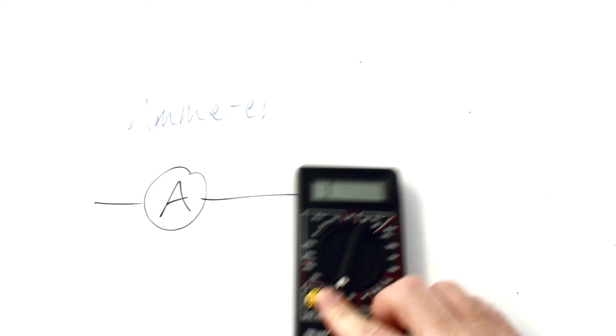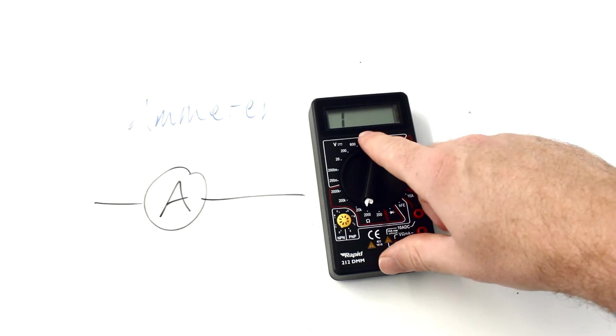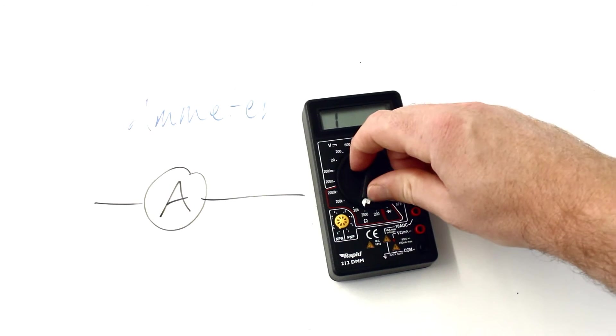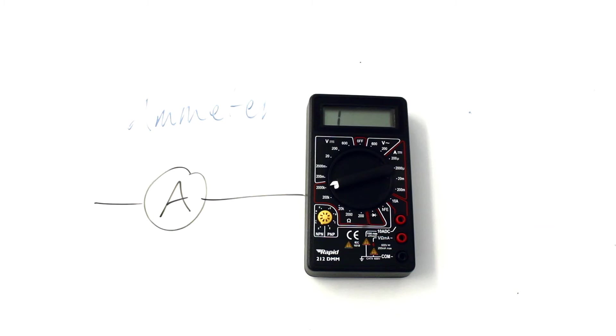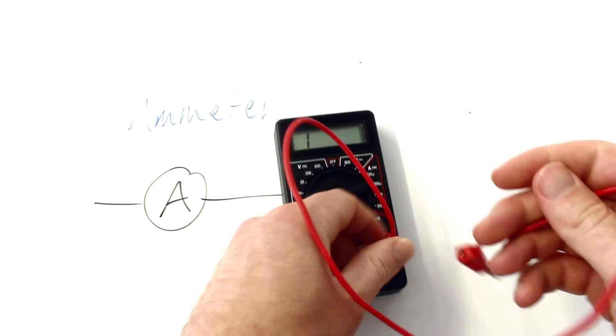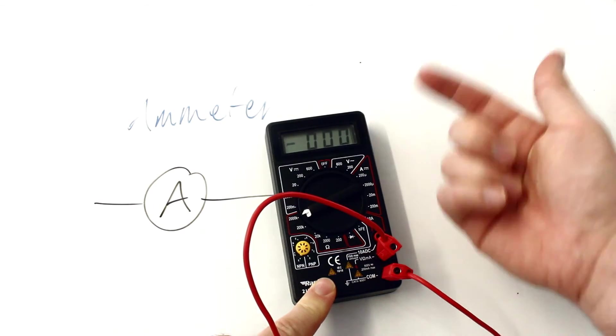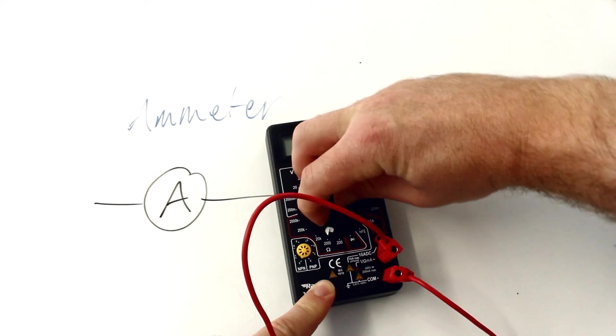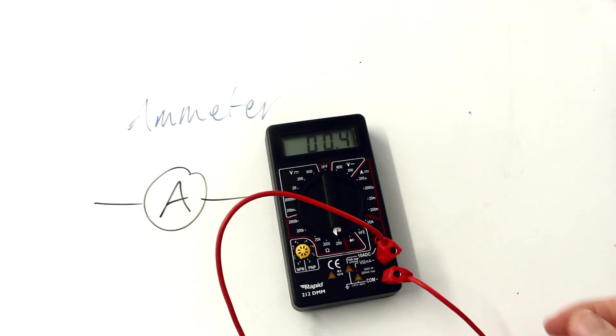But over here it's called an ohm meter, which means it measures the resistance between the two ports. At the minute it's saying it's a really high resistance, a too high resistance to measure because there's nothing in between them. But if I connect a wire between them, wires have very low resistances. There you go, almost down to zero. Is it completely zero? That wire's got 0.4 ohm resistance there.